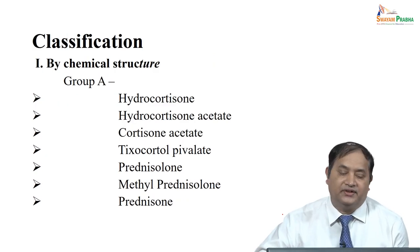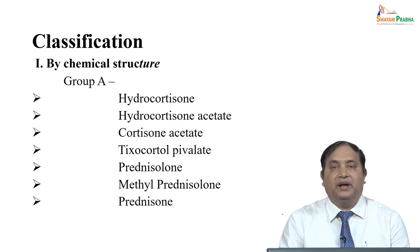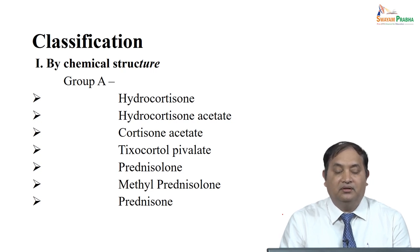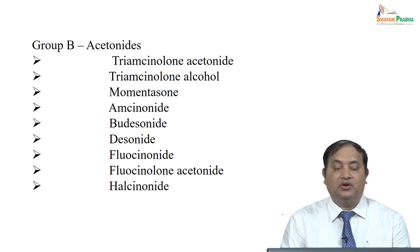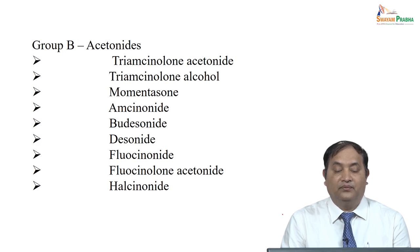Let us classify all the steroids. Looking at the chemical structure: Group A includes hydrocortisone, hydrocortisone acetate or cortisone acetate, tixocortol pivalate, prednisolone, methylprednisolone, and prednisone. Group B — acetonides — includes triamcinolone acetonide, triamcinolone alcohol, mometasone, budesonide, desonide, fluocinolone acetonide, and halcinonide.